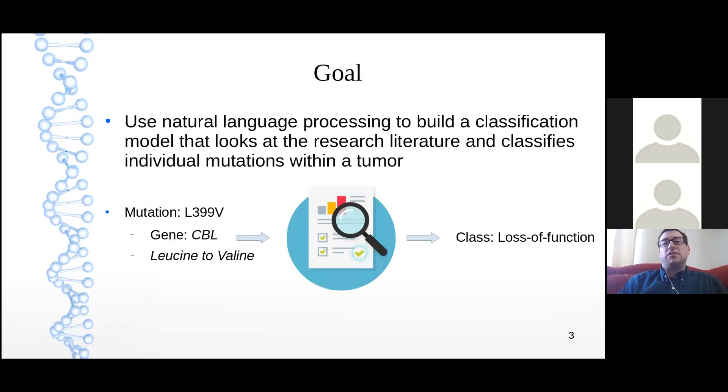Therefore, my goal is to use natural language processing and machine learning to build a classification model that looks at the research literature and classifies individual mutations within the tumor. For example, here we have the gene CBL, and in the 399th position, the amino acid that should be coded is leucine, but after this specific mutation, the valine amino acid is coded. The model then looks at the scientific literature surrounding this specific mutation and spits out a classification. In this case, it would be a loss of function mutation classification.